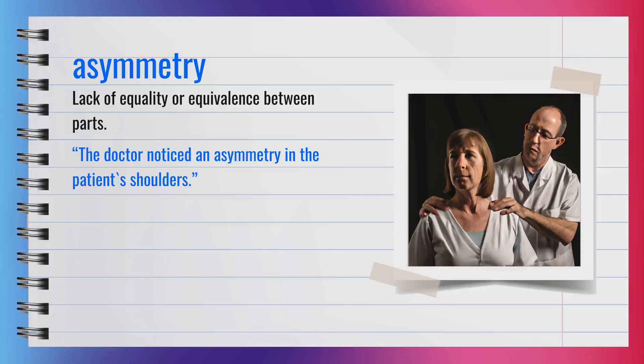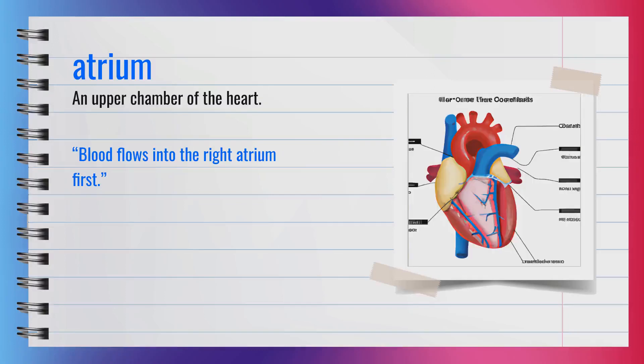The word asymmetry, spelled A-S-Y-M-M-E-T-R-Y, is a noun. It means a lack of equality or equivalence between parts. Synonyms include imbalance and unevenness. For example, the doctor noticed an asymmetry in the patient's shoulders. In summary, asymmetry means lack of equality between parts.